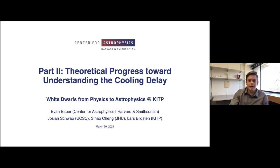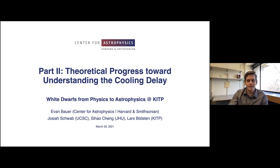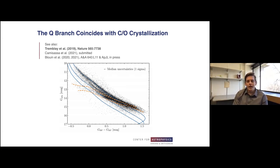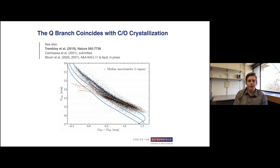Like Sihao said, I'm going to talk a little more about the theoretical understanding we have so far. There are still some very interesting puzzles, but there's been progress over the last year. The first thing I want to emphasize is a point we're quickly starting to agree on: the Q branch has something to do with crystallization of massive white dwarfs — specifically, that it has to be carbon-oxygen cores, even though these are fairly massive white dwarfs in the range of one to 1.3 solar masses making up the Q branch.